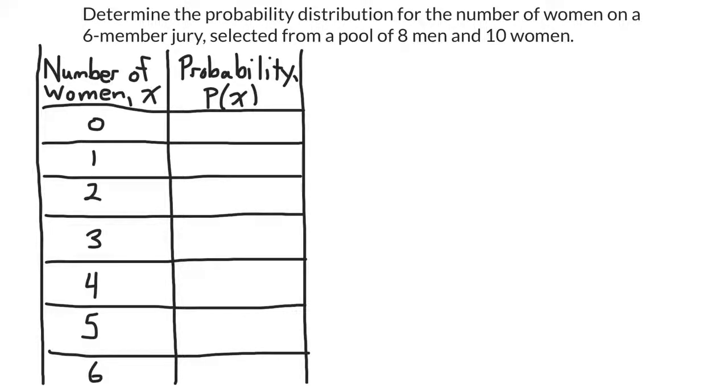Since the question is asking for a probability distribution, I'm going to set up my table like this, where X is the number of women on the jury, and P of X is the probability that there are that many women.